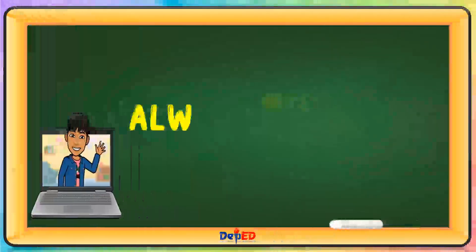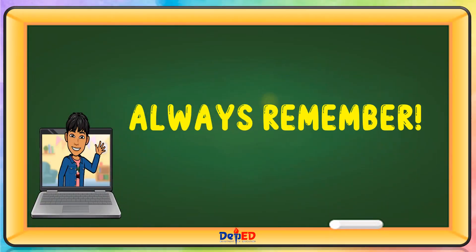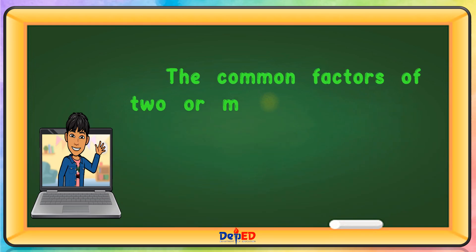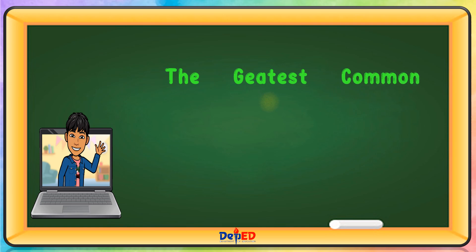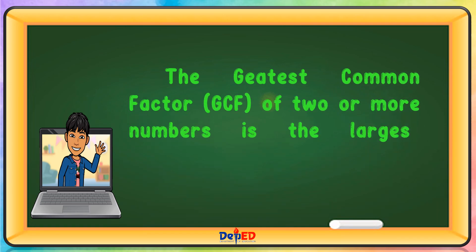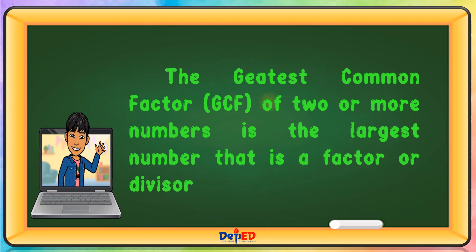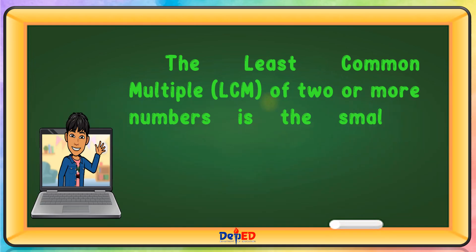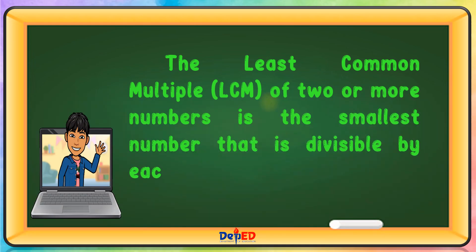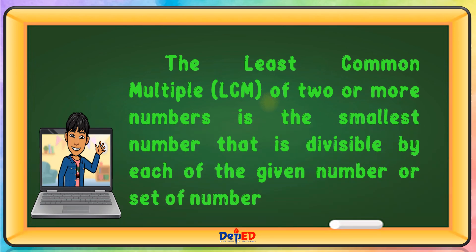Always remember: the common factors of 2 or more numbers are factors of all the given numbers. The Greatest Common Factor, or GCF, of 2 or more numbers is the largest number that is a factor or divisor of each number. The Least Common Multiple, or LCM, of 2 or more numbers is the smallest number that is divisible by each of the given numbers.